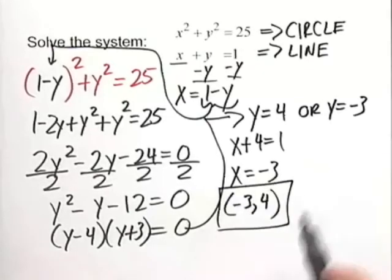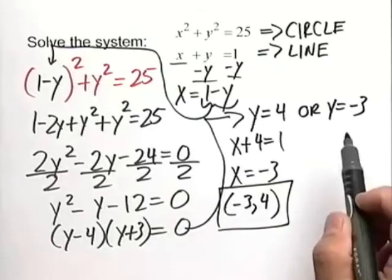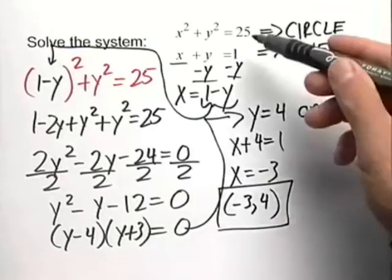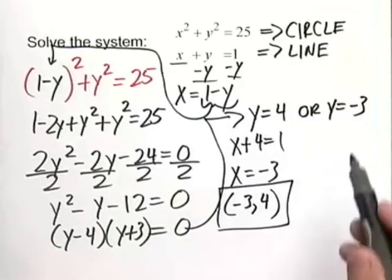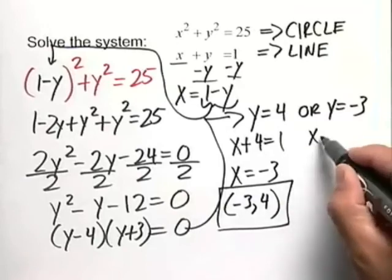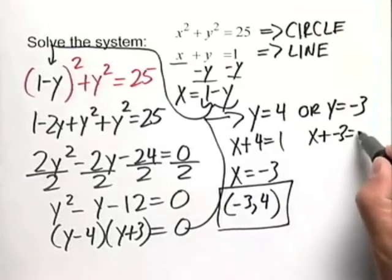We need to do the same thing when y is equal to negative 3. Plug that back, and if you wanted to get fancy here, you could plug it back into the circle equation. Let's just go ahead and plug it back into the linear equation. That's a little bit nicer.